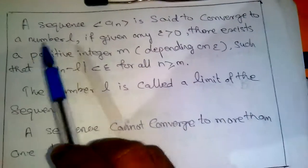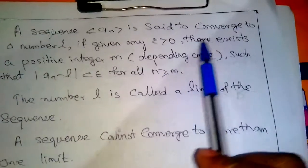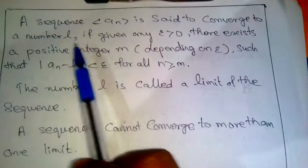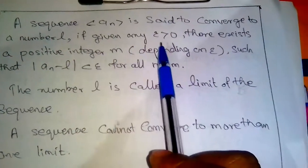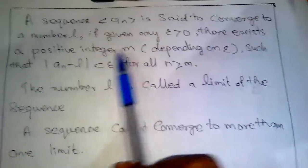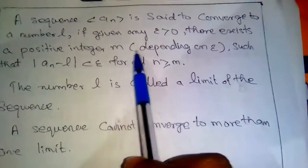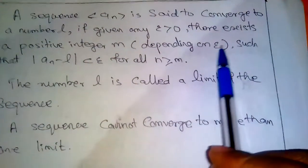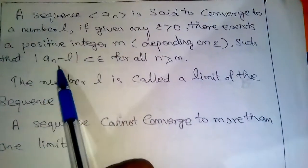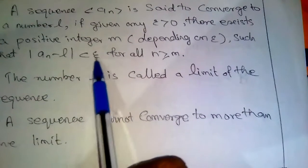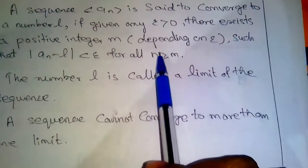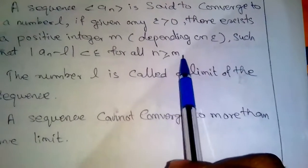A sequence An is said to converge to a number L if given any epsilon greater than 0, there exists a positive integer M depending on epsilon such that |An - L| < epsilon for all n ≥ M.